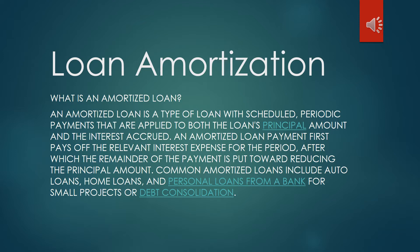An amortized loan payment first pays off the relevant interest expense for the period, and after which, the remainder of the payment is put toward reducing the principal amount. Common amortized loans include home loans, auto loans, and personal loans from a bank for small projects or debt consolidation. In other words, amortization happens when a person pays off the debt over time with regular equal monthly payments, with a portion going towards the interest and reducing the loan balance.